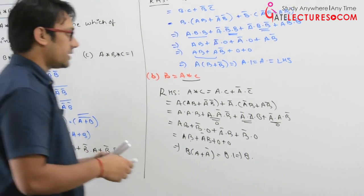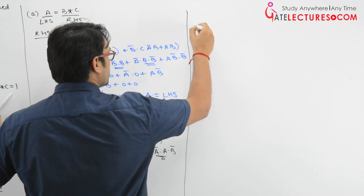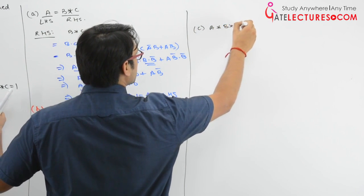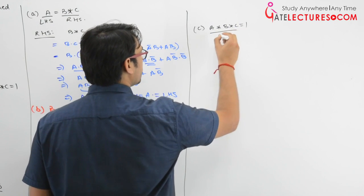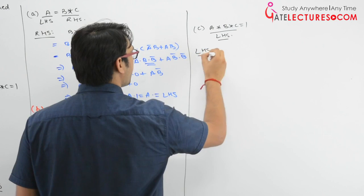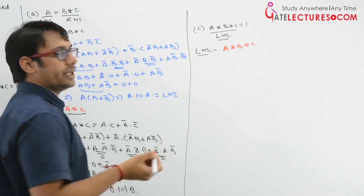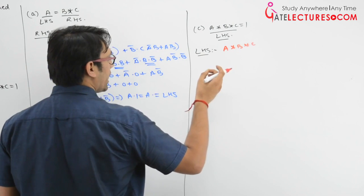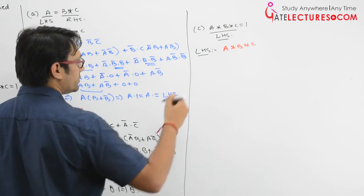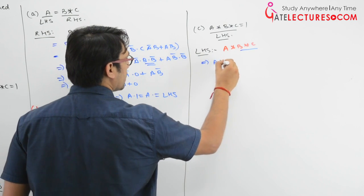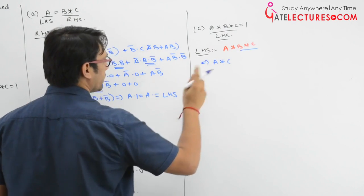Now let us take the third part, which may be trickier than the previous ones: a★b★c = 1. We take the left-hand side. We already know a★b = ab + a'b' and c = a★b. So we can observe that a★b★c can be rewritten as c★c, since a★b equals c.